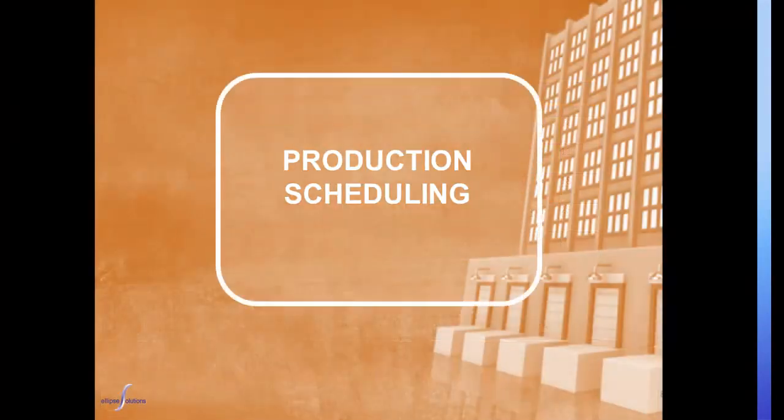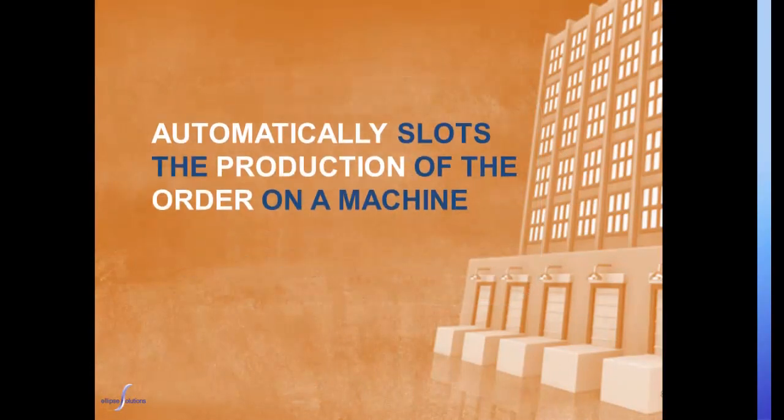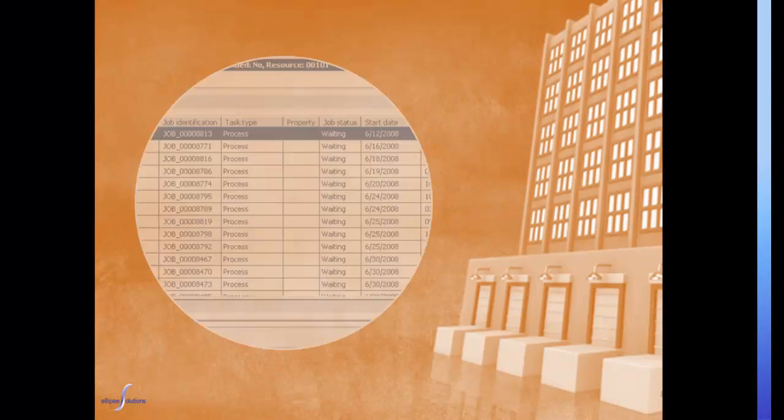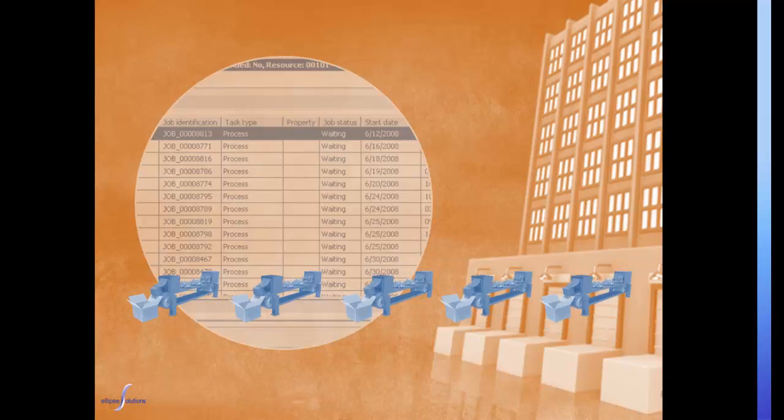Scheduling is the first step in this production process. The role of the scheduling system in Dynamics AX for plastics is to plan the actual production process in such a way that each production order is assigned a schedule date based on capacity and material availability. The system also allows a scheduler to easily sequence the schedule as well as level the production load by moving production orders to balance capacity requirements.